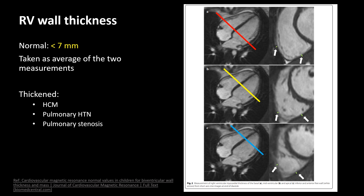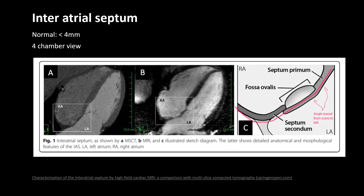For the right ventricle, normal RV wall thickness should be up to 7 mm, and this can be thickened in HCM, pulmonary hypertension, or pulmonary stenosis. The interatrial septum can be measured in the 4-chamber view and should be up to 4 mm normally. Here is a detailed anatomy of the septum.